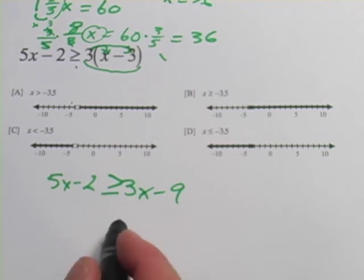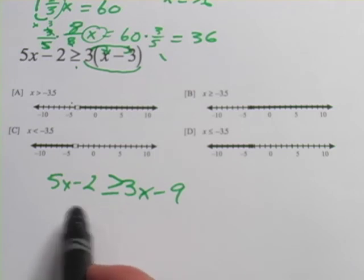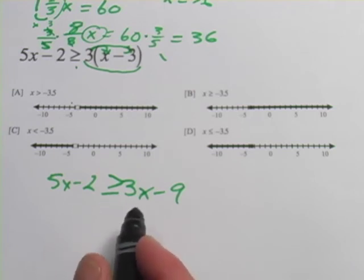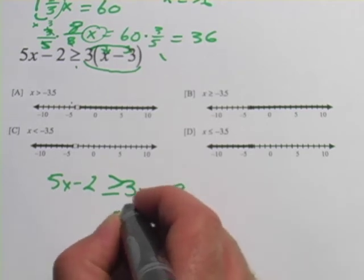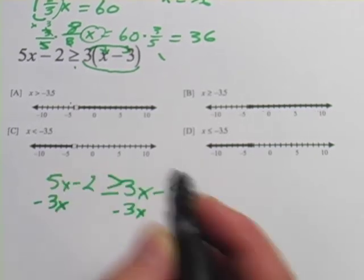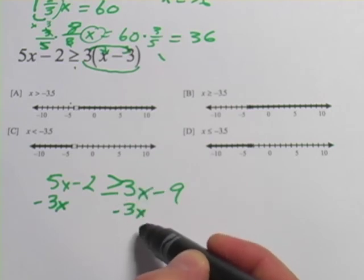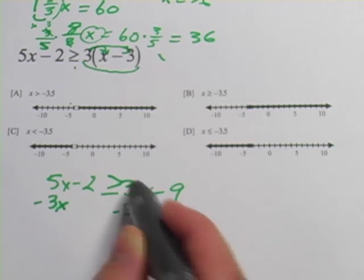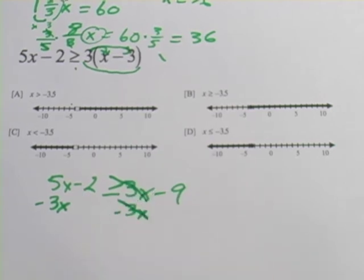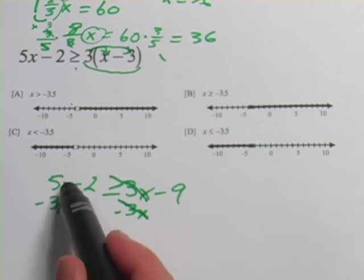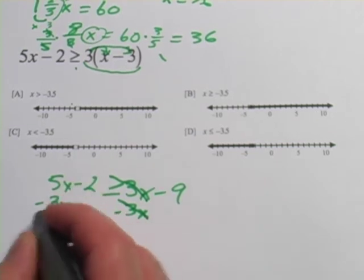Or you could get rid of the 3x over here by subtracting 3x from both sides. Personally, I would suggest subtracting 3x because then you don't end up with a negative number to have to deal with. Whenever possible try to avoid those negative numbers. So I'm going to subtract 3x from both sides. When I subtract 3x from 3x here, it becomes 0, which we won't even write. It's like they cancel. When I subtract 3x from 5x, that becomes 2x.